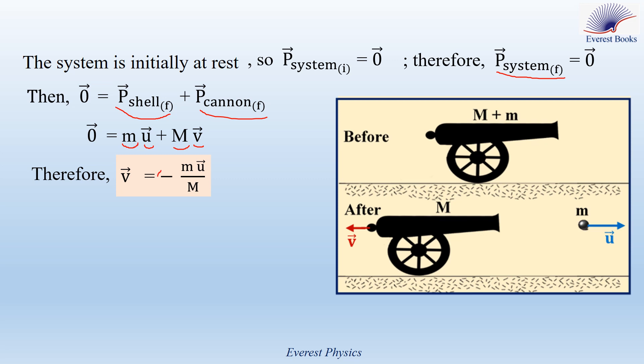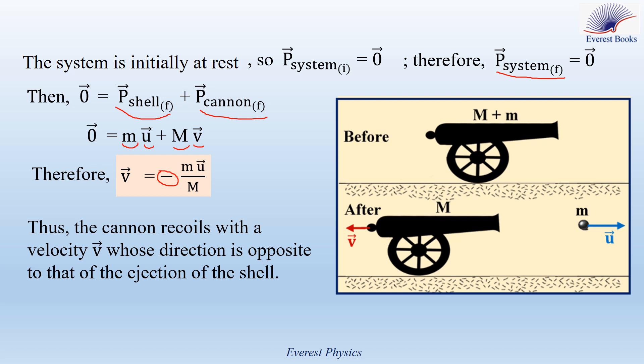What does the minus sign represent? Since m/M is always positive, V and U have opposite directions. Therefore, the cannon recoils with a velocity V whose direction is opposite to that of the ejection of the shell. Furthermore, since the mass of the shell over the mass of the cannon is much less than 1 — because the cannon is much more massive than the shell — we conclude that the speed of the cannon after ejection is much less than that of the shell.